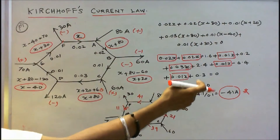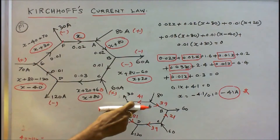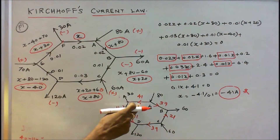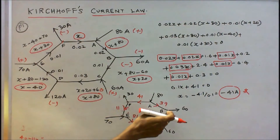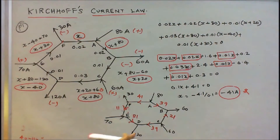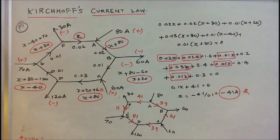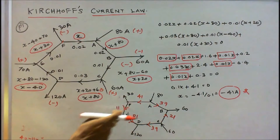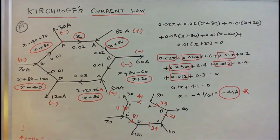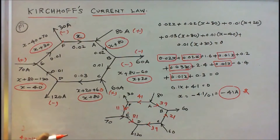Solving the equation, X equals minus 41 amps. The minus sign indicates the direction is opposite to the reference. So the actual current is 41A. This gives 41 plus 39 equals 80 at point A. At junction B, 39 plus 21 equals 60 — current towards equals current leaving. At junction C, 39 plus 21 equals 60. At junction D, 81 plus 39 equals 120. At junction E, 81 minus 11 equals 70. At junction F, 41 minus 11 equals 30. Kirchhoff's Current Law is verified.